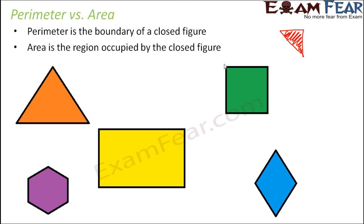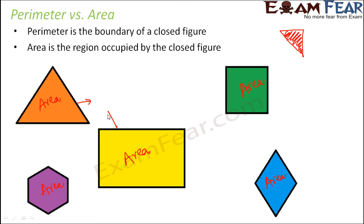When we talk about area, it is the region occupied by the closed figure. When you look at this triangle, the orange region inside it is nothing but the area. The total space inside that closed figure is its area. So the yellow region, the green region, the purple region, and the blue region in each figure — all of these colored regions represent area.